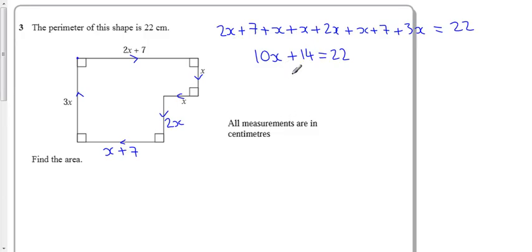So 10x plus 14 equals 22, that means 10x must be 8 as I take away 14 from both sides. Now x is 8 divided by 10, which is 0.8.